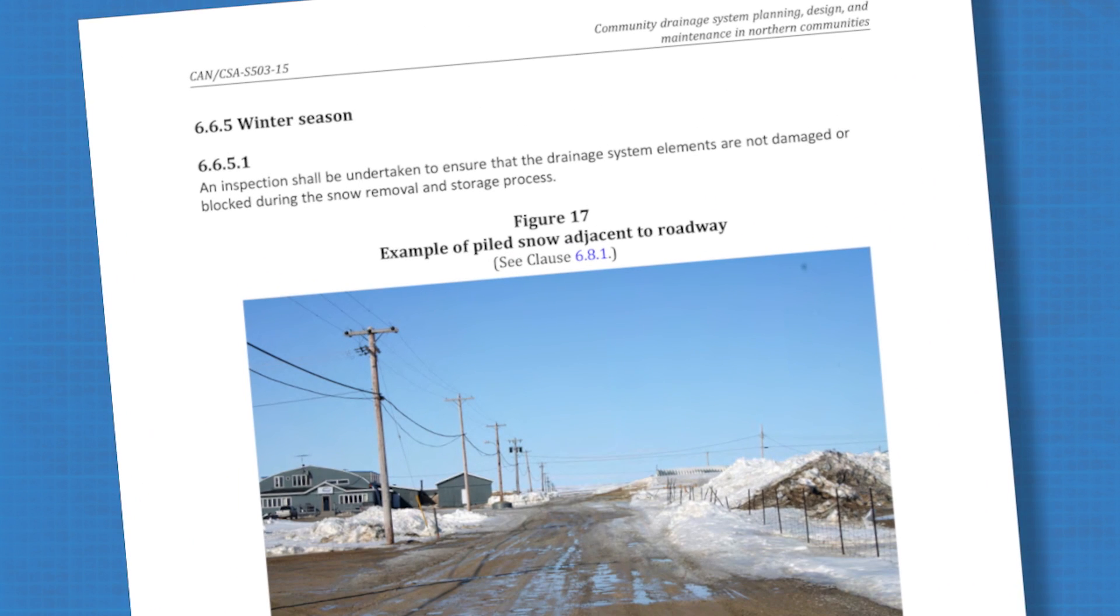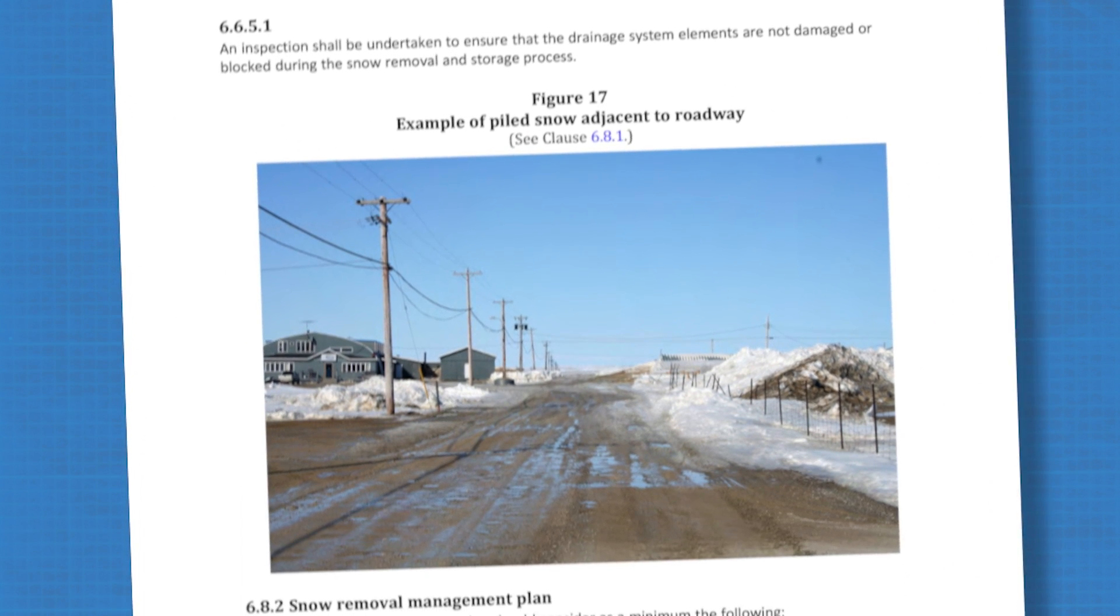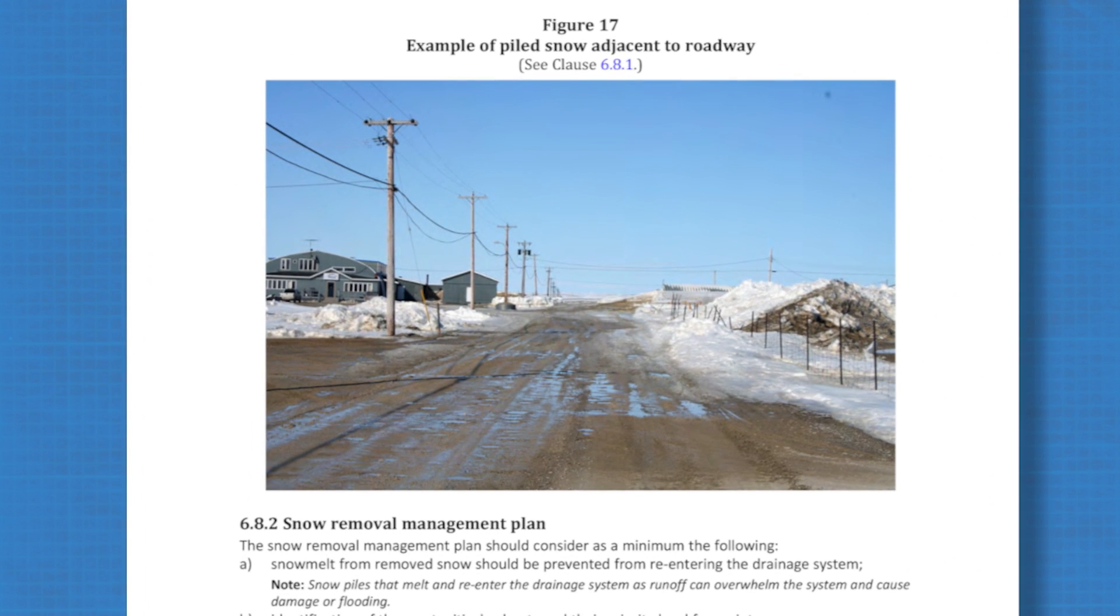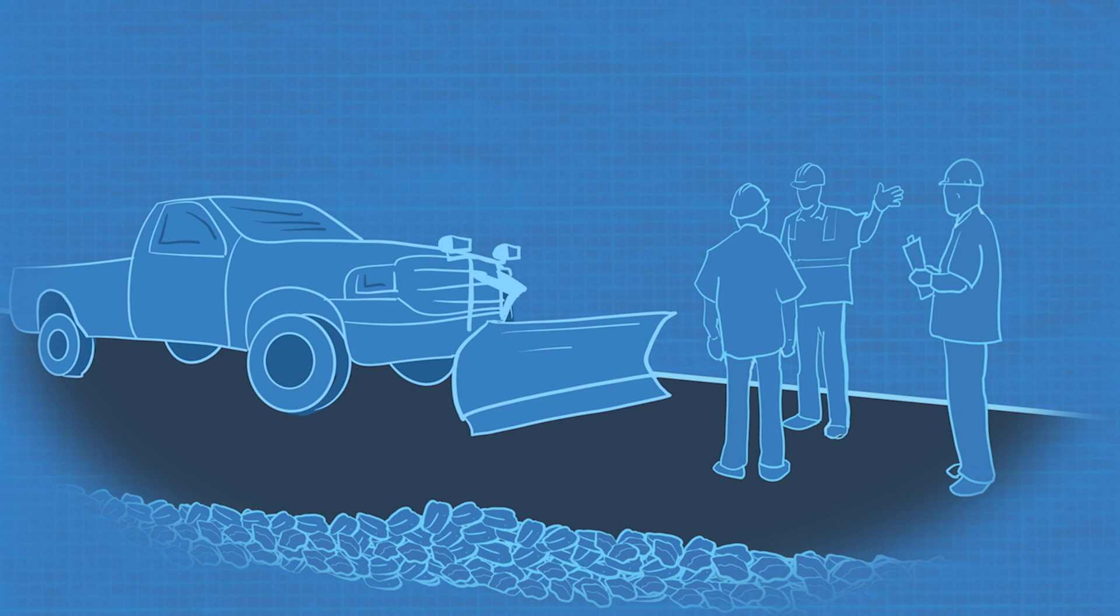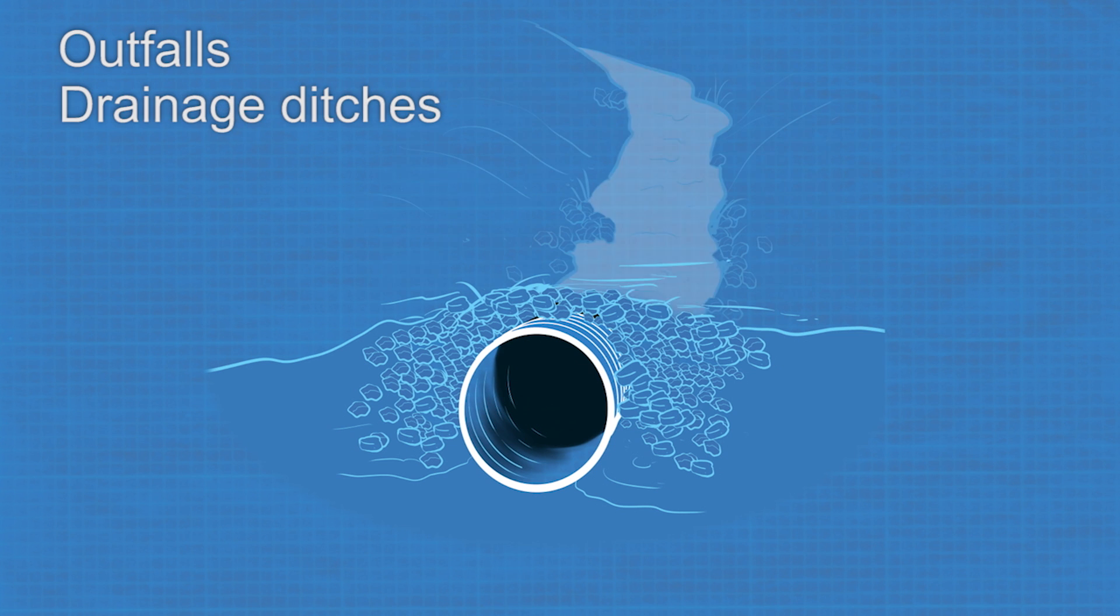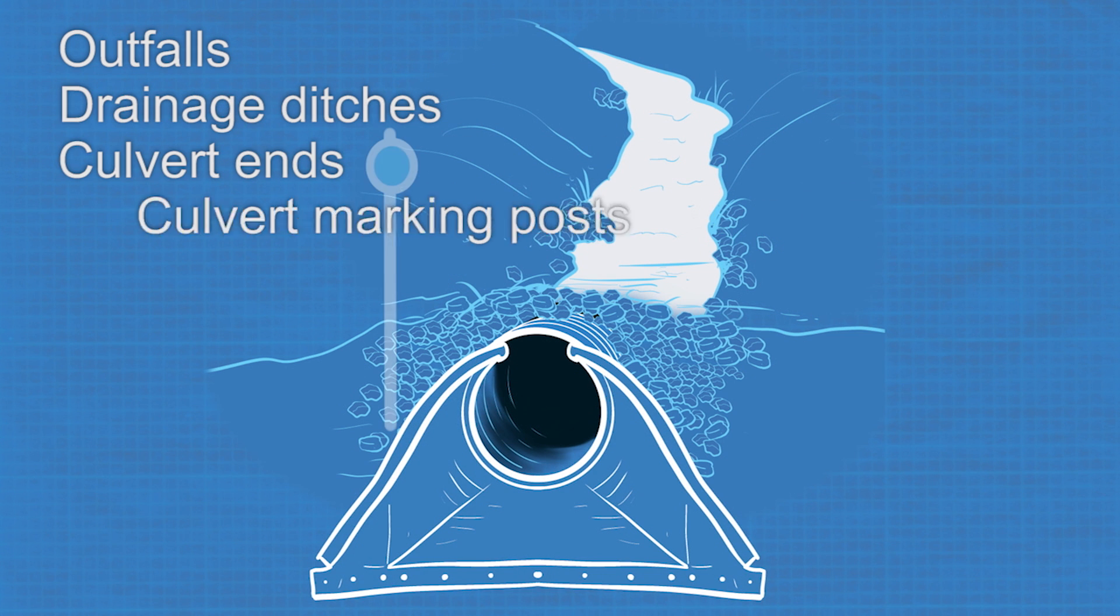In winter, snow removal from building roofs and community roads becomes a major priority. Well before snow begins to fly, go all around the community and carefully mark these key pieces of your drainage system. Outfalls, drainage ditches, culvert ends and culvert marking posts.